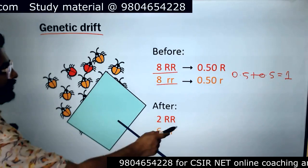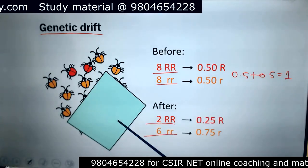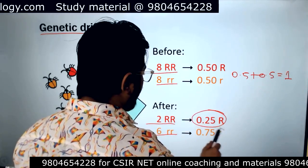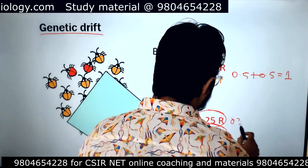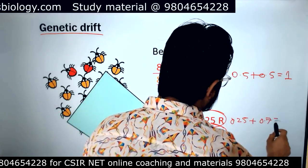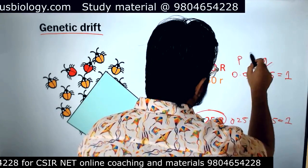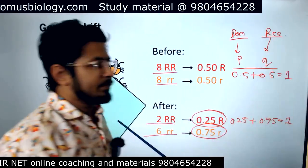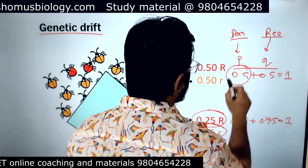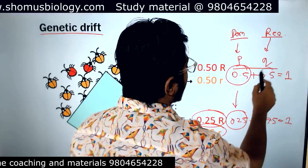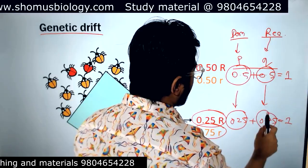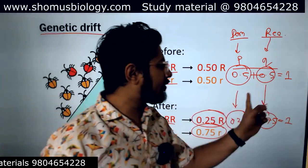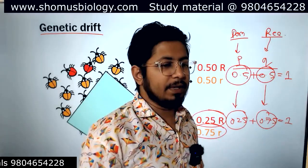Total 8 survived: 2 red and 6 yellow. The frequency of red is now 2 out of 8, which is 0.25, and 6 out of 8 yellow is 0.75. So the frequency of red is 0.25 and frequency of yellow is 0.75, totaling 1. If we consider red as the dominant allele and yellow as the recessive allele, the dominant allele's frequency dropped from 0.5 to 0.25, and the recessive allele's frequency increased from 0.5 to 0.75.